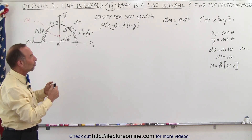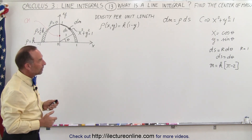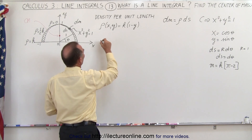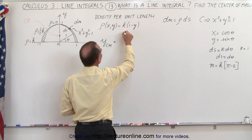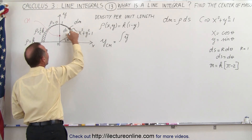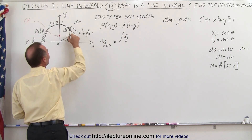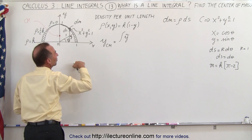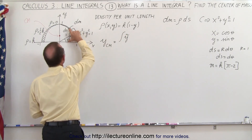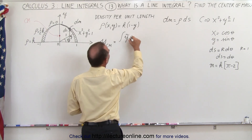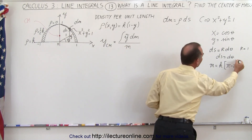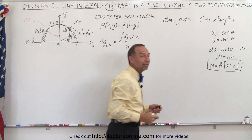Here you can see how that is actually a line integral — our goal is to show that we can do this using line integrals. The equation to find the center of mass is as follows: the y-coordinate of the center of mass is equal to the integral of the center of mass of a small segment. If we take a small segment, the center of mass of that would be at height y from the x-axis. We multiply that times dm and divide by the mass of the entire wire, which we've already figured out in the previous video.